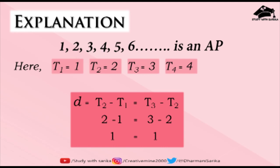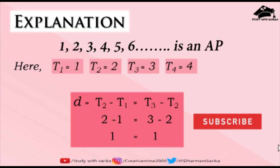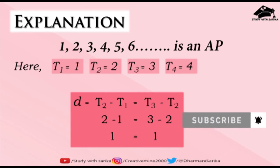Yes, it is an AP because the next term depends on the previous term. If the first term is 1 and I know the common difference is 1, I can find the second term: 1 plus 1 is 2. Then for the third term, I add the common difference to the second term: 2 plus 1 is 3. This is the basic concept of arithmetic progression. I hope you understand this concept very well and enjoy the video. Thank you for watching and stay tuned. Take care, bye.